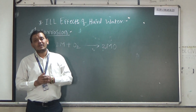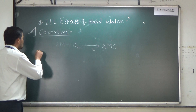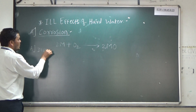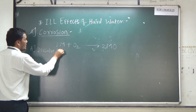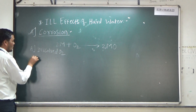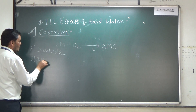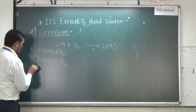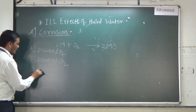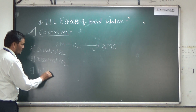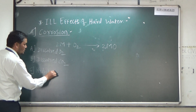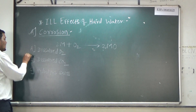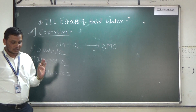There are three different reasons for corrosion. Number one is dissolved oxygen (O₂), number two is dissolved carbon dioxide (CO₂), and number three is hydrolysis of salts. These are the three main responsible factors for corrosion.